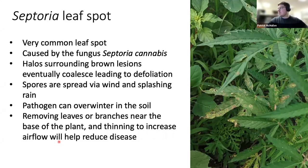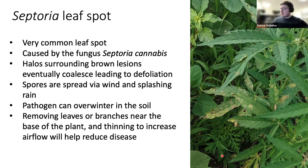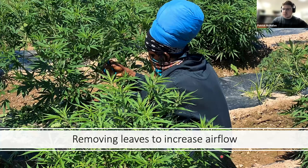Fungal pathogens are much more common, with a wide array that is very problematic to growers. One of the most common fungal leaf spots is Septoria leaf spot, caused by the fungus Septoria cannabis. These lesions have a brown necrotic center followed by a yellow halo. Eventually the lesions coalesce and lead to defoliation. Spores are spread via wind and splashing rain, and this pathogen can overwinter in the soil — making crop rotation history important. Removing leaves or branches near the base and thinning the plant to increase airflow will help.